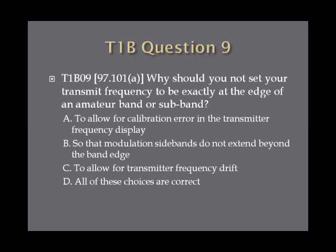Question 9. Why should you not set your transmit frequency to be exactly at the edge of an amateur band or subband? A. To allow for calibration error in the transmitter frequency display. B. So that modulation sidebands do not extend beyond the band edge. C. To allow for transmitter frequency drift. Or D. All of these choices are correct.